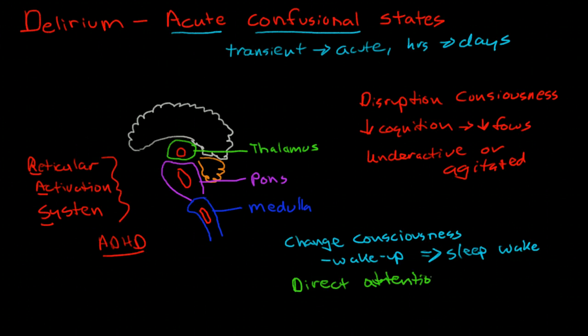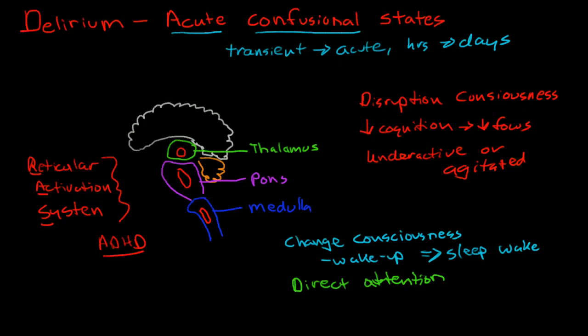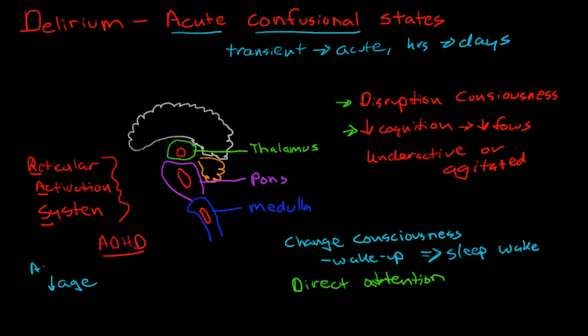So if you have changes in the reticular activating system, you're going to directly impact consciousness and directly impact our ability to focus and problem solve. Interestingly enough, elderly people actually have some atrophy and decreased activity in the reticular activating system. It decreases with age, so this makes elderly people more prone to developing delirium.